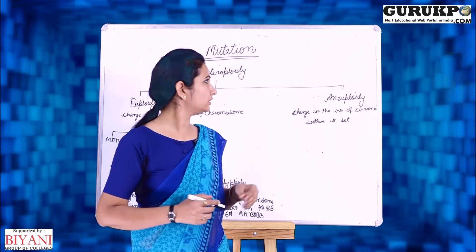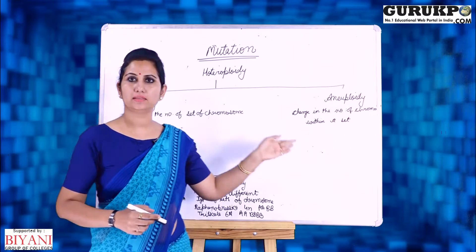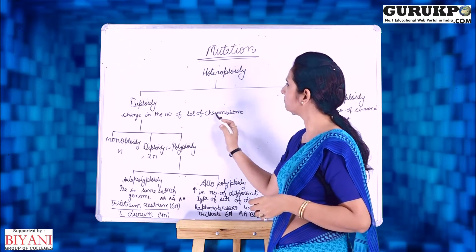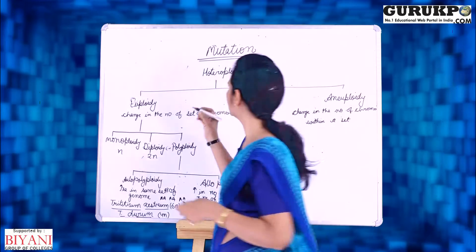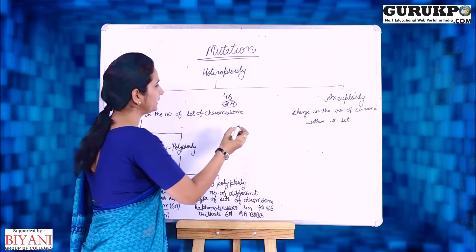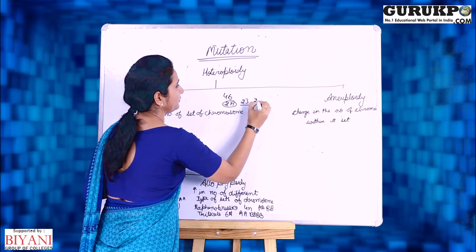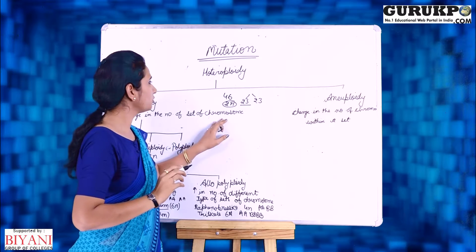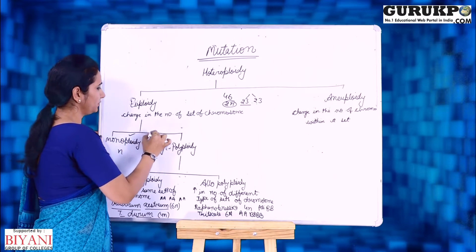First we are going to discuss heteroploidy, which is divided into two types: euploidy and aneuploidy. In euploidy, the change occurs in the number of sets of chromosomes. In human beings, there are 46 chromosomes — a diploid condition with two sets of 23 chromosomes each. In euploidy, a change in the chromosome set occurs, giving rise to three kinds of mutation.